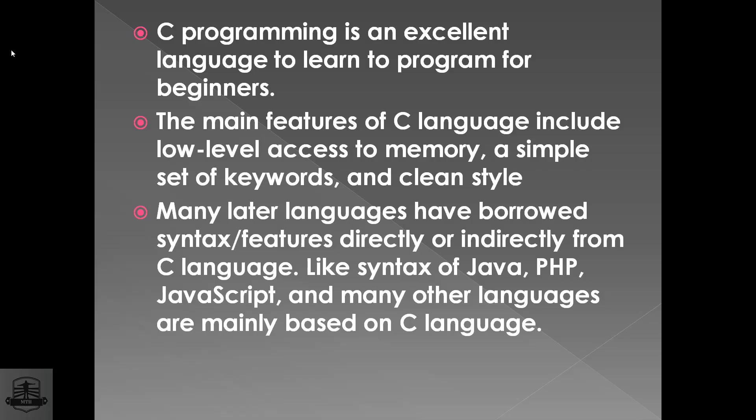Let's look at the main features of C language. The main features of C language include: low level access to memory, a simple set of keywords, and clean style. Low level access to memory means memory is directly accessible. A simple set of keywords means it is simple and understandable. It is easy and has a clean style.